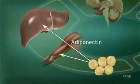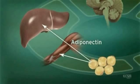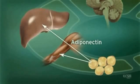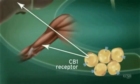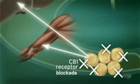Adiponectin, another hormone secreted by adipocytes, regulates lipid and glucose metabolism. Adiponectin is believed to regulate fatty acid oxidation in muscle and liver, thus improving insulin sensitivity. CB1 receptor stimulation in adipocytes reduces adiponectin, while CB1 blockade increases adiponectin synthesis.